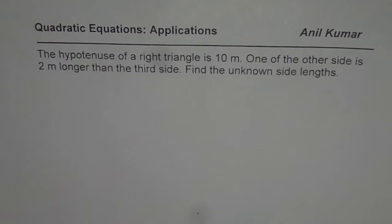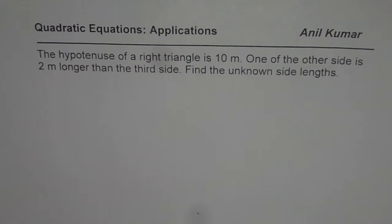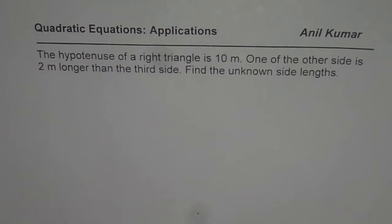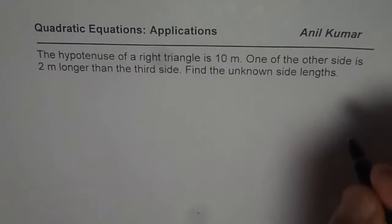I am Anil Kumar and here is an application question on quadratic equations. This question is from the assignment of my student. The question is: the hypotenuse of a right triangle is 10 meters. One of the other sides is 2 meters longer than the third side. Find the unknown side lengths.